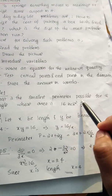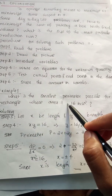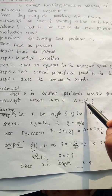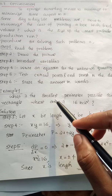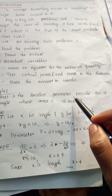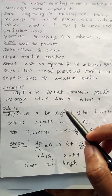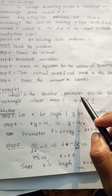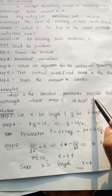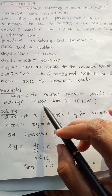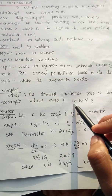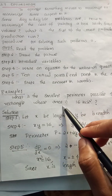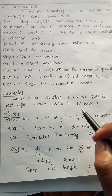Example: What is the smallest perimeter possible for a rectangle whose area is 16 square inches? The question is asking for the smallest perimeter. The given data is that the area is 16 square inches. The basic dimensions of a rectangle are length and breadth.